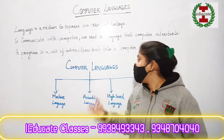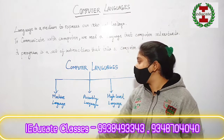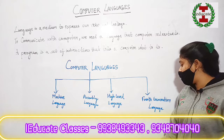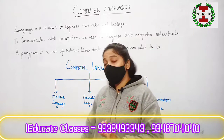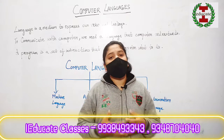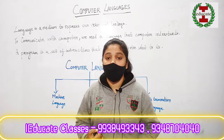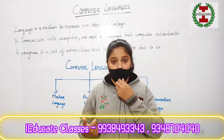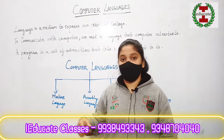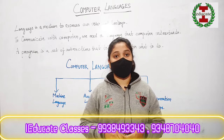Computer language is further divided into four types: machine language, assembly language, high-level language, and fourth generation language. The language which the computer understands is only the machine language. Machine language consists of only binary digits — that is, zero and one. For further study, you can join using the link given in the description box.